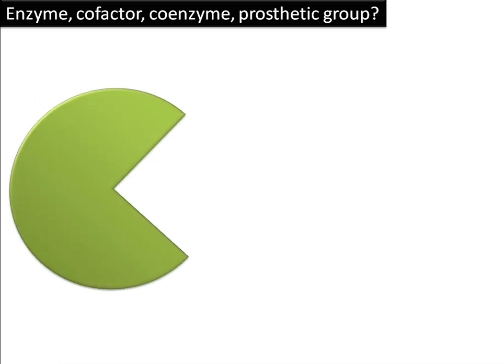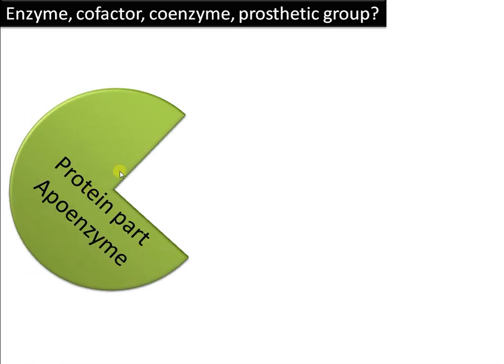As you all know, enzymes are biological catalysts that speed up chemical reactions without undergoing any change themselves. They speed up the reaction by lowering the activation energy. Enzymes are generally made up of a protein part, called the apoenzyme, and a non-protein part, called the cofactor.